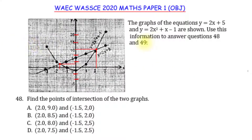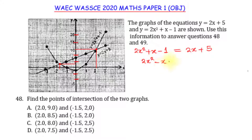So that implies 2x² + x - 1 = 2x + 5. Moving everything to the left-hand side: 2x² + x - 2x - 1 - 5 = 0, which gives 2x² - x - 6 = 0. Now I have a quadratic equation to solve.